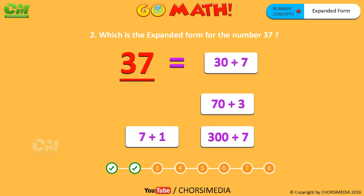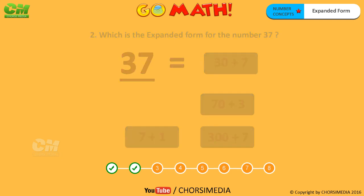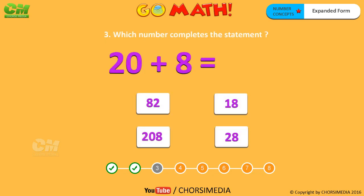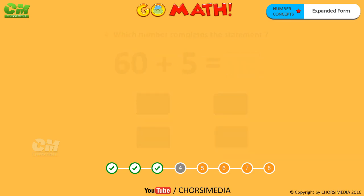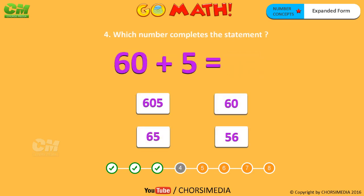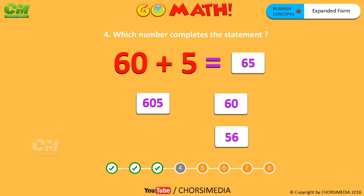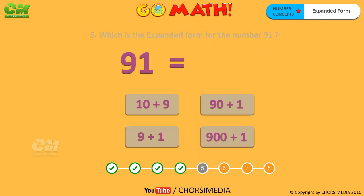Which number completes the statement 20 plus 8 equals 28? You are right, the correct answer is 28. Here is another statement: 60 plus 5 equals 65. You are right, the correct answer is 65.